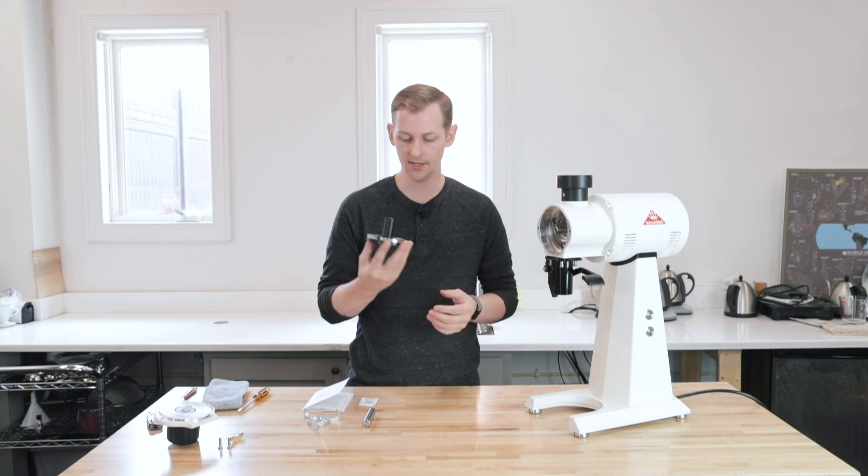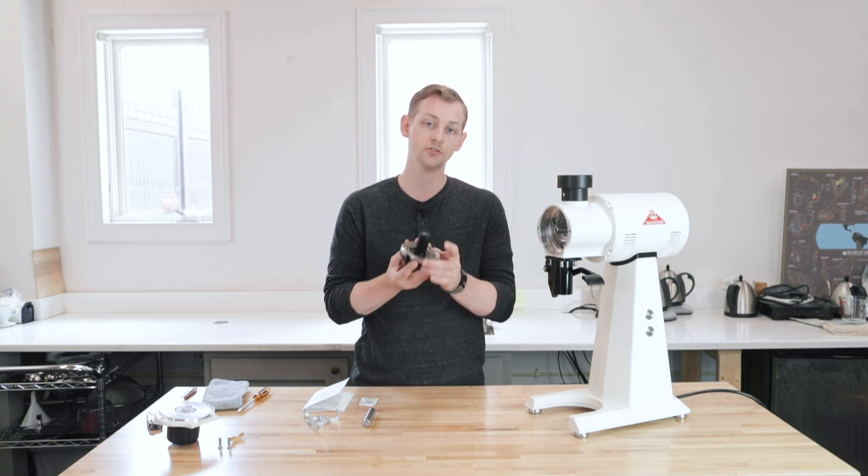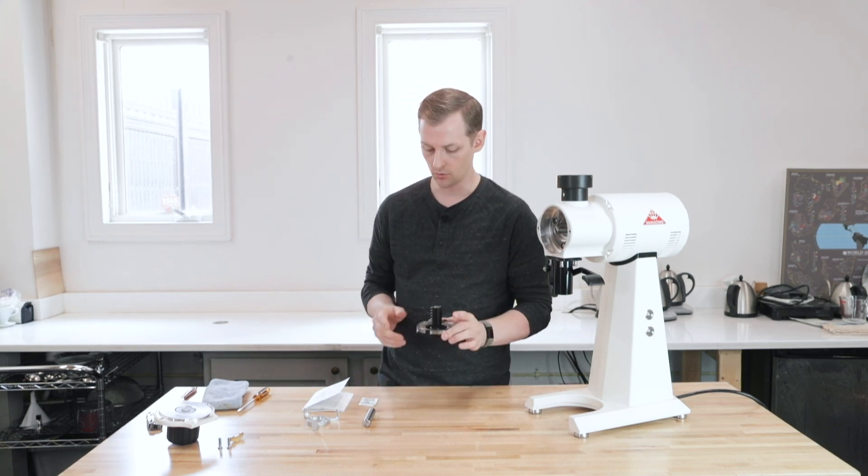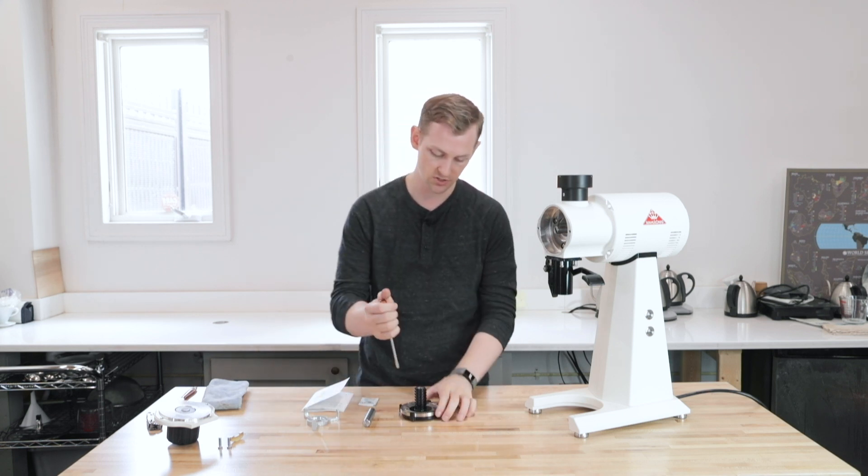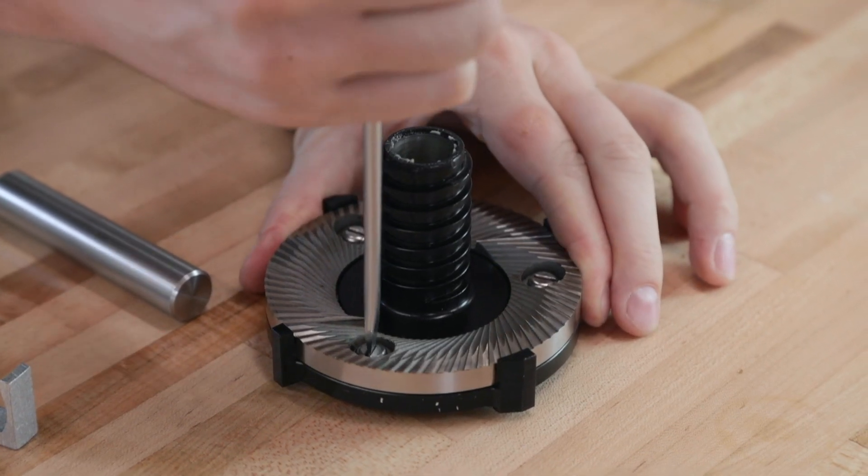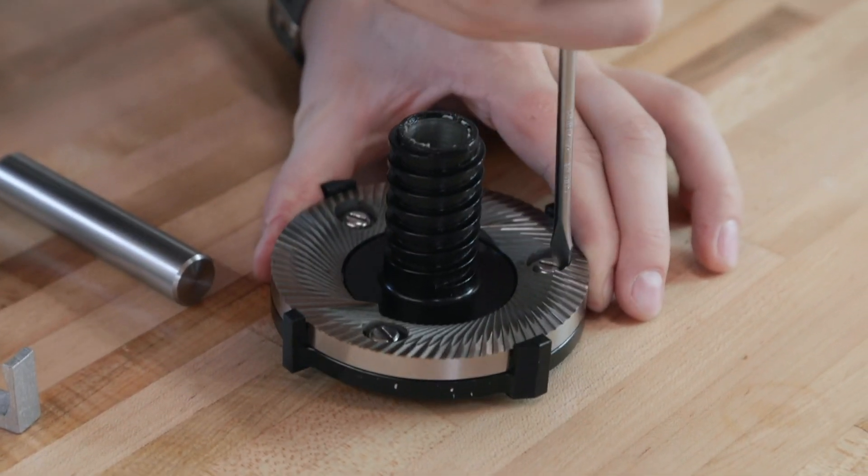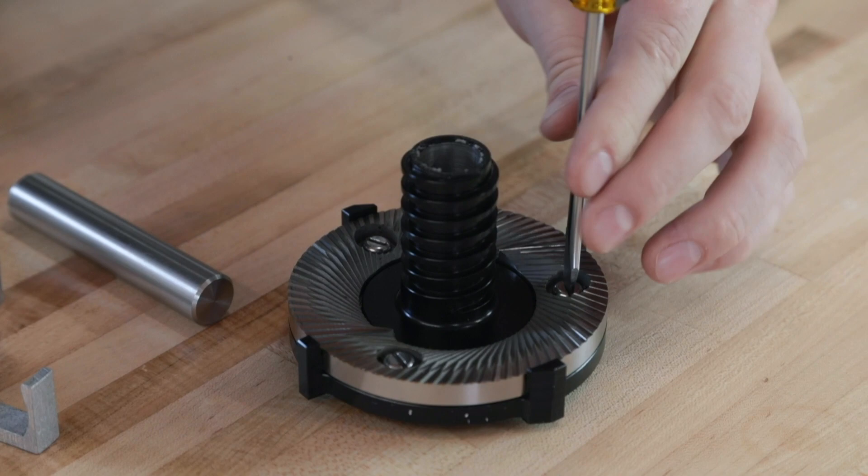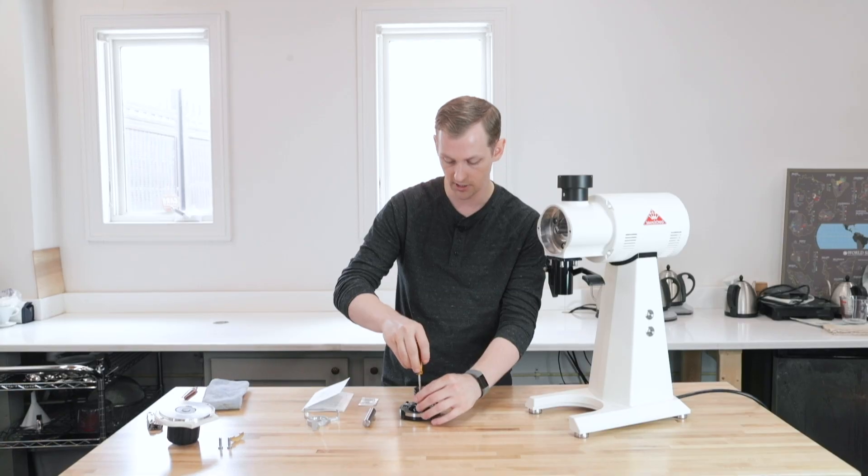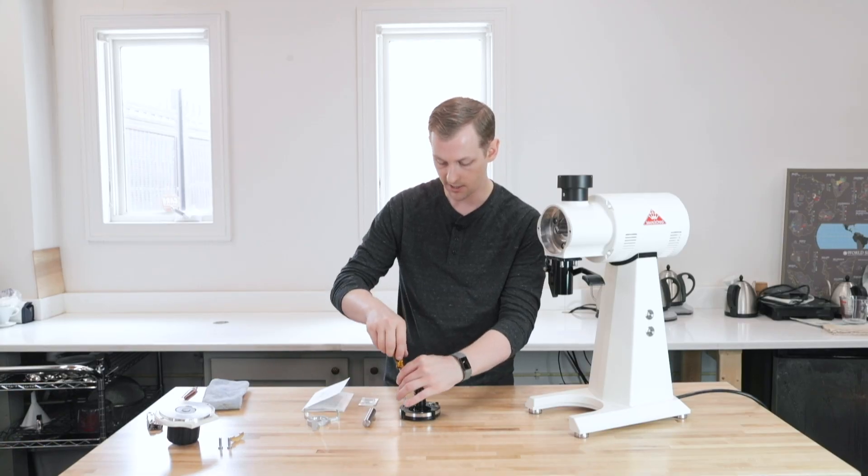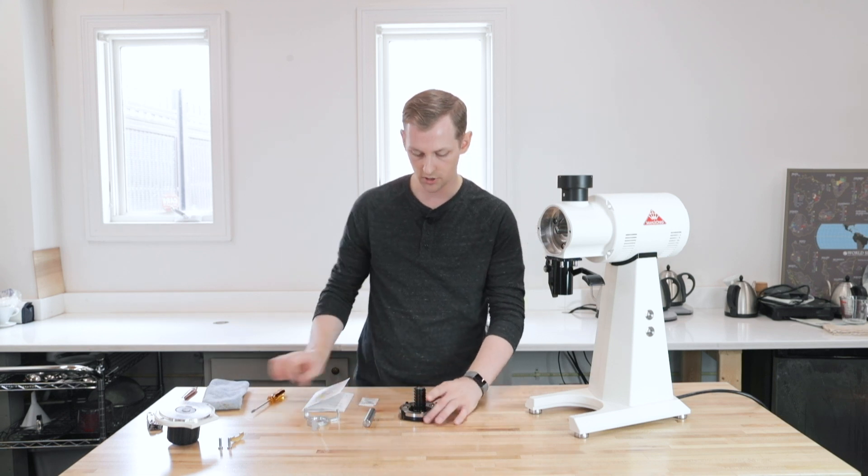So I've got my burr carrier out and I'm going to actually work on this rotating burr first. So first step is to just loosen these three screws. I don't need to remove them fully unless of course I wanted to take it out and clean it. But my burrs, I cleaned them prior to starting this process. So I'm just going to loosen these three screws, just a couple of turns.